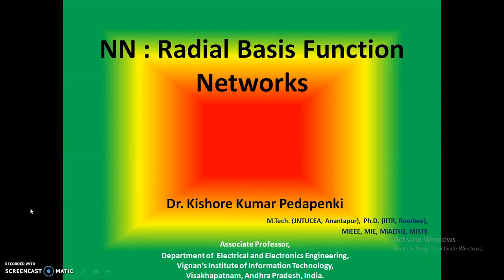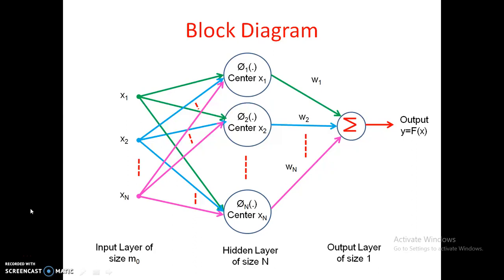In this lecture, we discuss Radial Basis Function (RBF) networks. These are neural networks based on radial basis functions. The structure consists of an input layer with m0 dimensionality, a hidden layer of size capital N, and an output layer. The output layer size should be less than capital N, where N is the training set size. This is the main block diagram with input, hidden, and output layers.